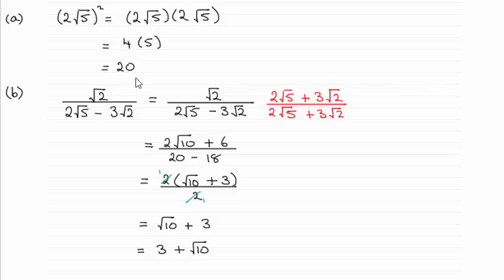So all that happens is you end up with 2√5 times 2√5 which we saw in the first part was 20. Then you're going to get 2√5 times 3√2 but then you're going to subtract it again so that's going to give us 0.